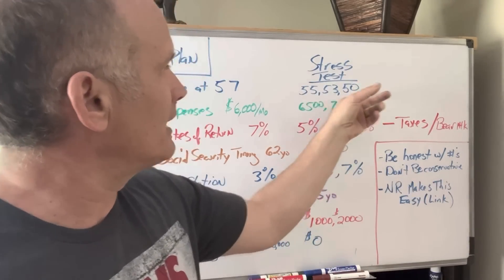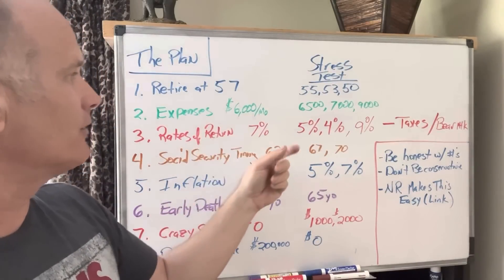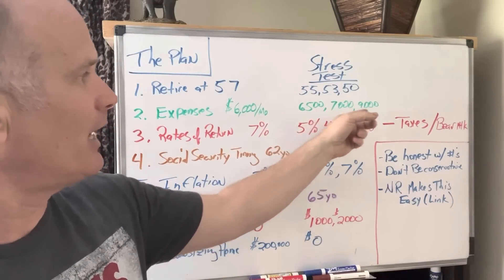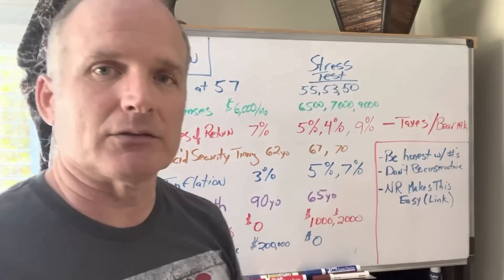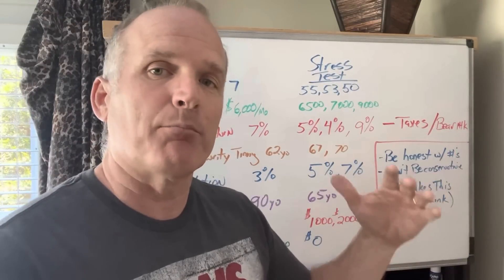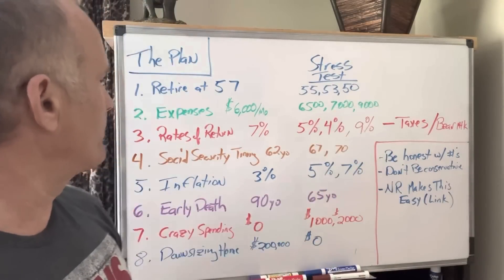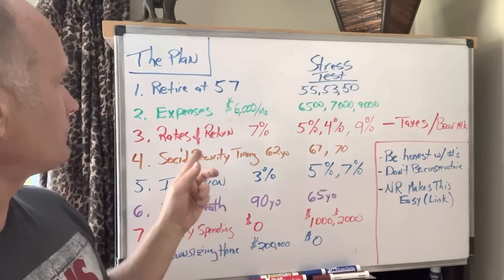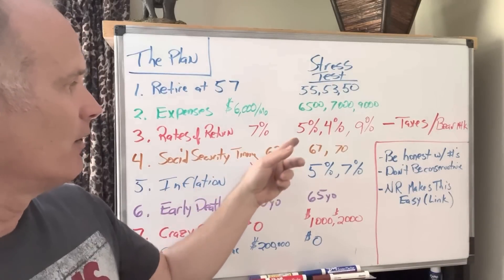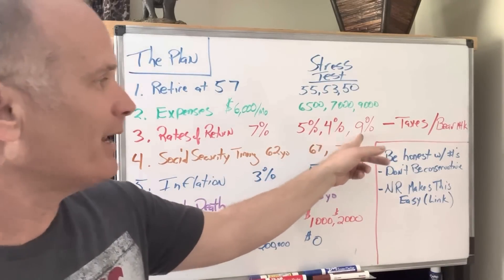Let's stress test expenses at $6,000 a month. Enter $6,500, $7,000, $9,000 — let's get the plan to break. Where does it break? With rates of return, you've entered 7%. What about 5%? What about 4%? What about 9%?